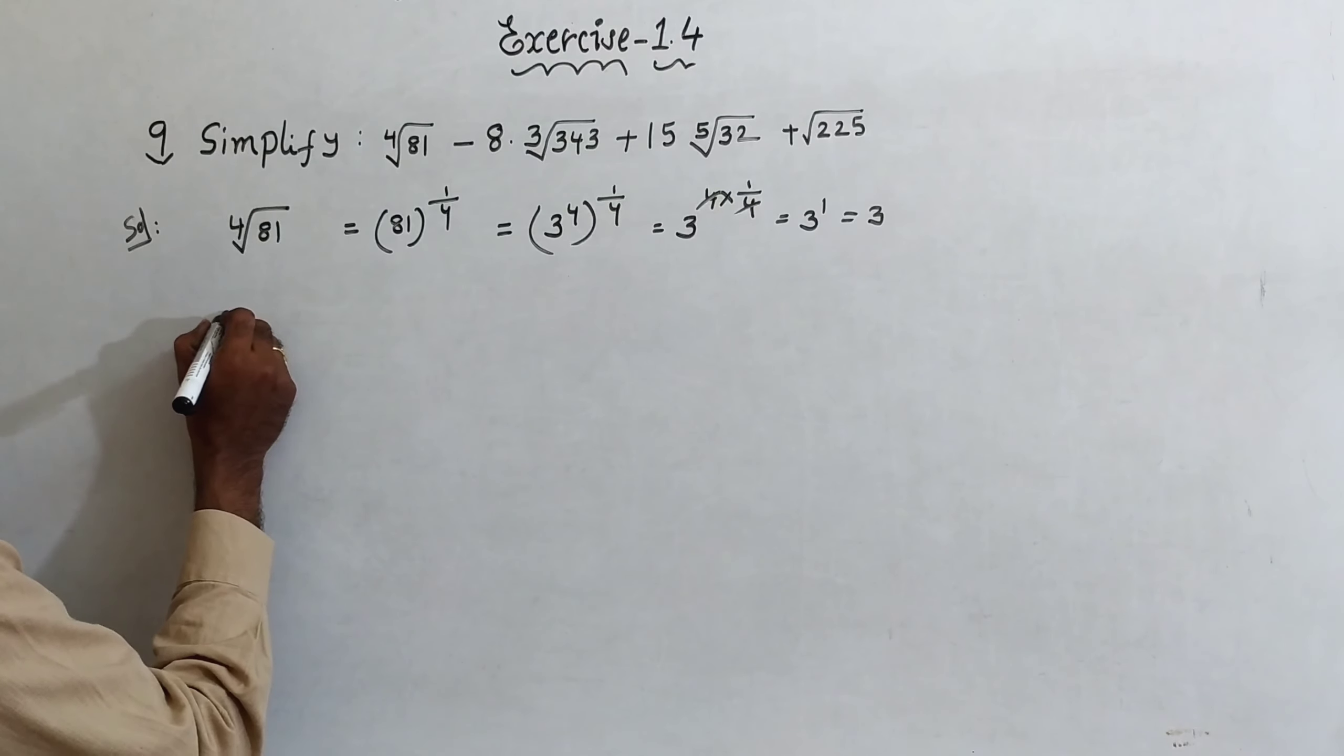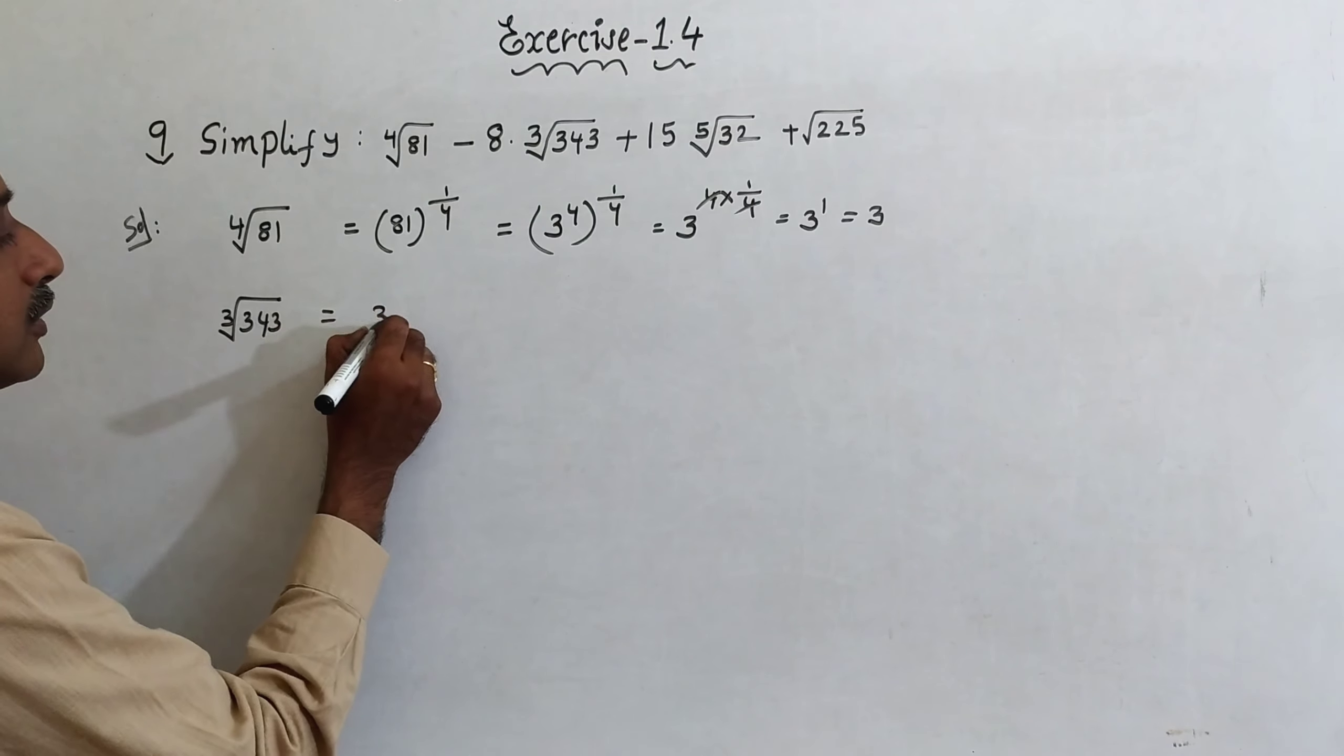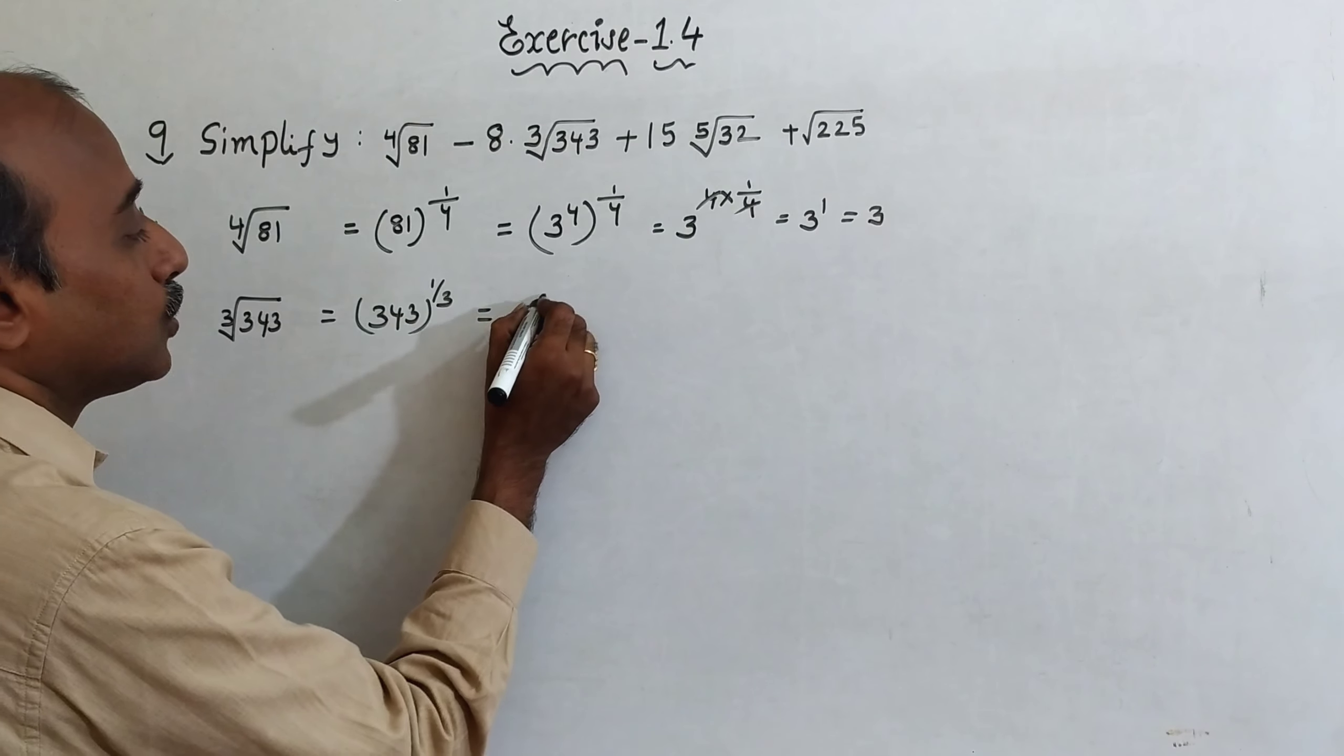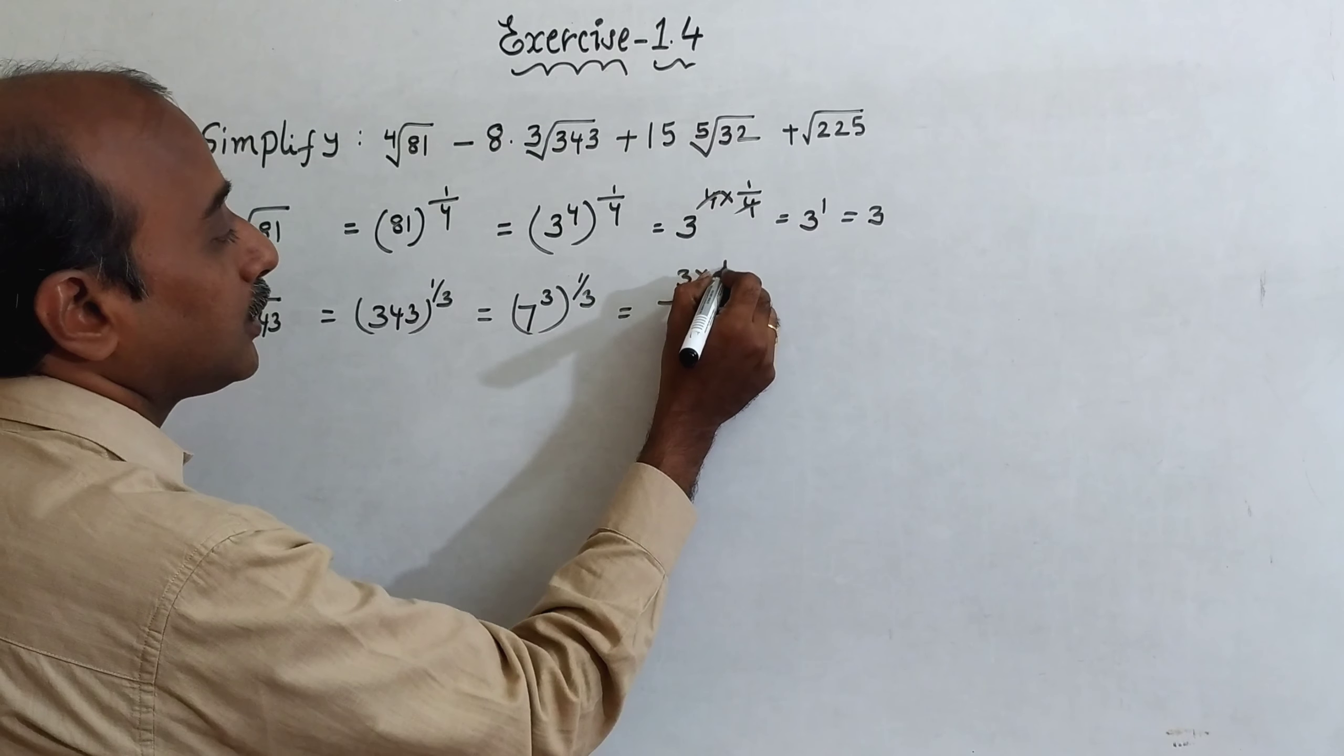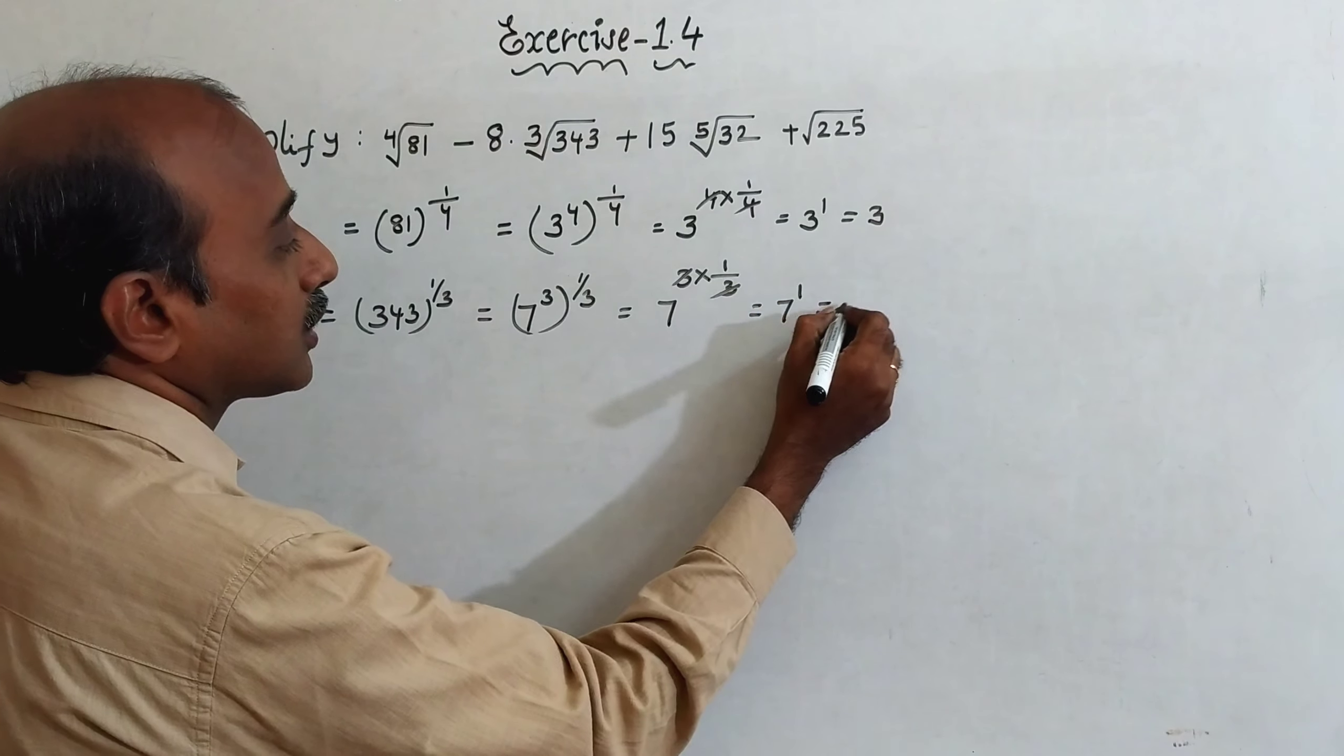Now, come to the cube root of 343. So, this you can write 343 all power 1 by 3. This you can write 7 cube, all power 1 by 3, that is equal to 7 power 3 into 1 by 3. 3 and 3 cancel, that is 7 power 1, that is equal to 7.